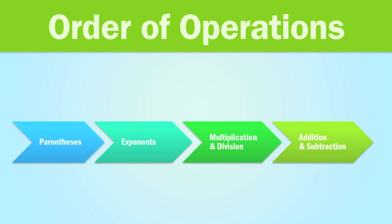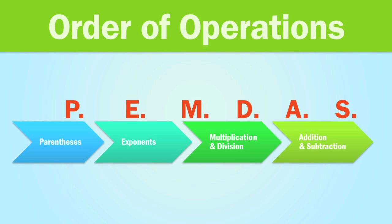The order of operations determines which parts of the formula to calculate first. The very first thing that you calculate is items in parentheses. Then, if you have any exponents, you'll calculate those. Next is multiplication and division. And lastly, addition and subtraction.